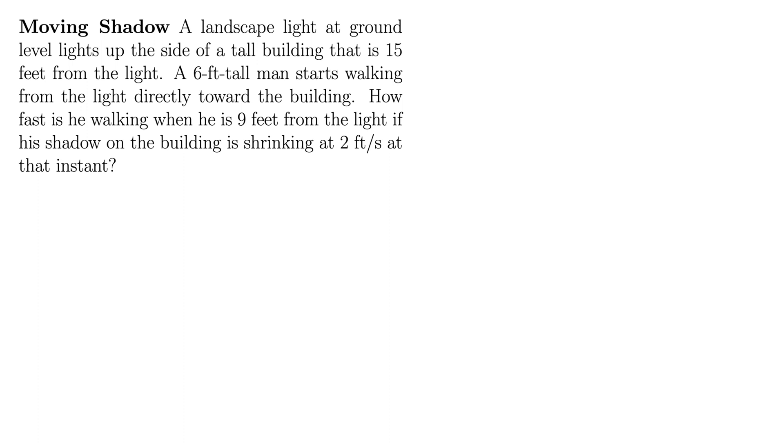Here we have one of the more infamous related rate exercises. It involves a moving shadow. A landscape light at ground level lights up the side of a tall building that is 15 feet from the light. A 6-foot tall man starts walking from the light directly toward the building. How fast is he walking when he is 9 feet from the light if his shadow on the building is shrinking at 2 feet per second at that instant?